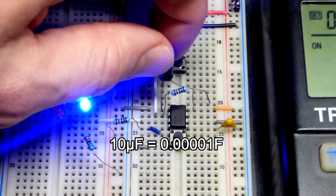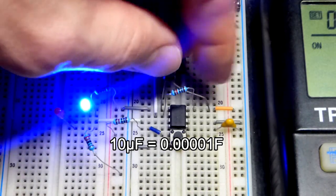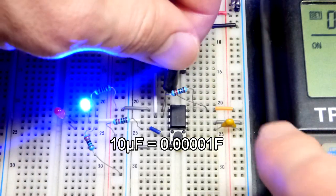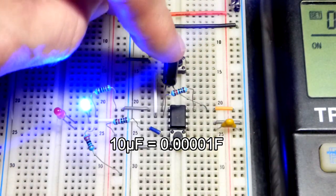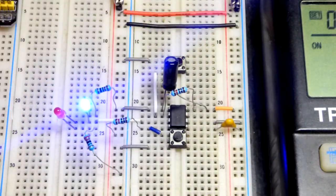So this is a 10 microfarad capacitor, 1,000 times the capacitance of the smaller one. And it stores 1,000 times the charge, so it's harder to change the voltage.